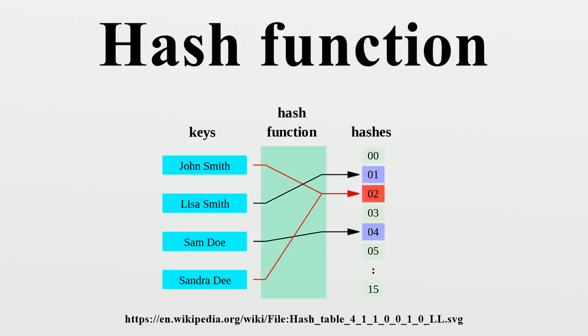That is, any two inputs that are considered equivalent must yield the same hash value. This can be accomplished by normalizing the input before hashing it, as by uppercasing all letters.